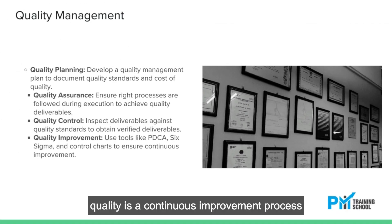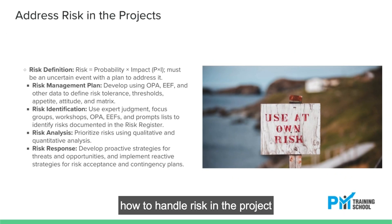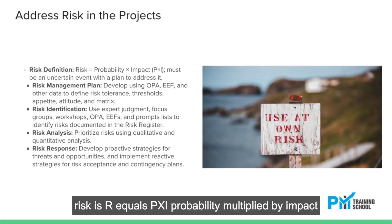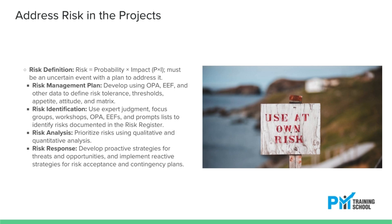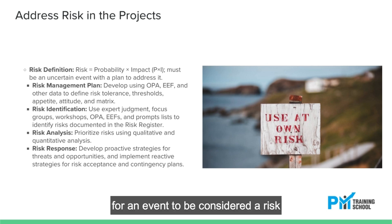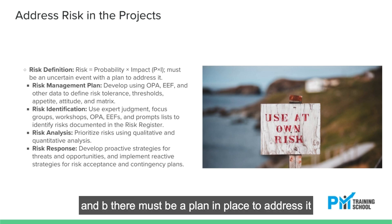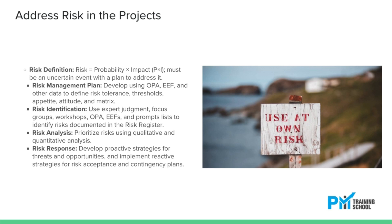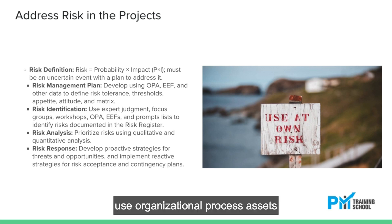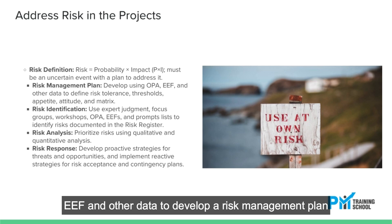Quality is a continuous improvement process. How to handle risk in the project: Risk equals P times I — probability multiplied by impact. For an event to be considered a risk, it must meet two criteria: (a) it has not yet occurred, and (b) there must be a plan in place to address it. Use Organizational Process Assets and other data to develop a risk management plan.